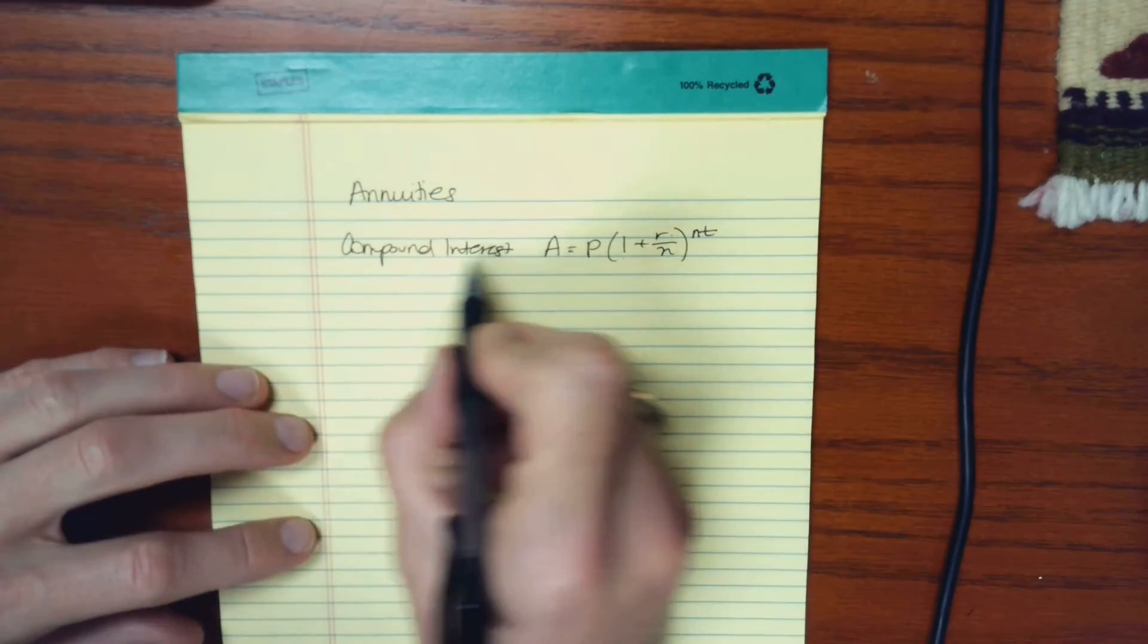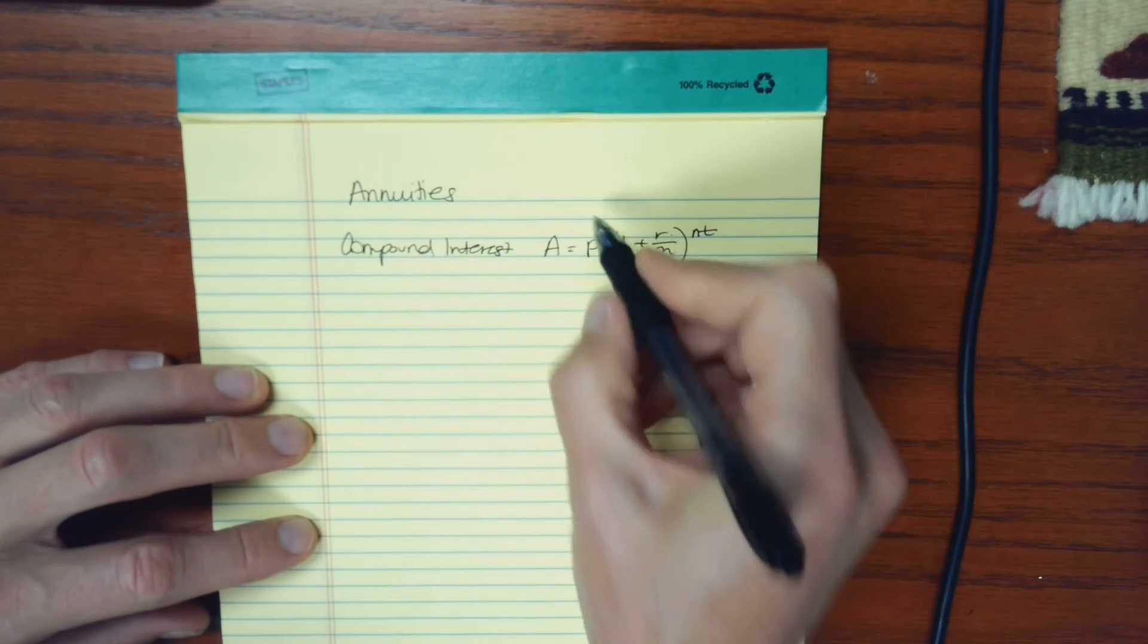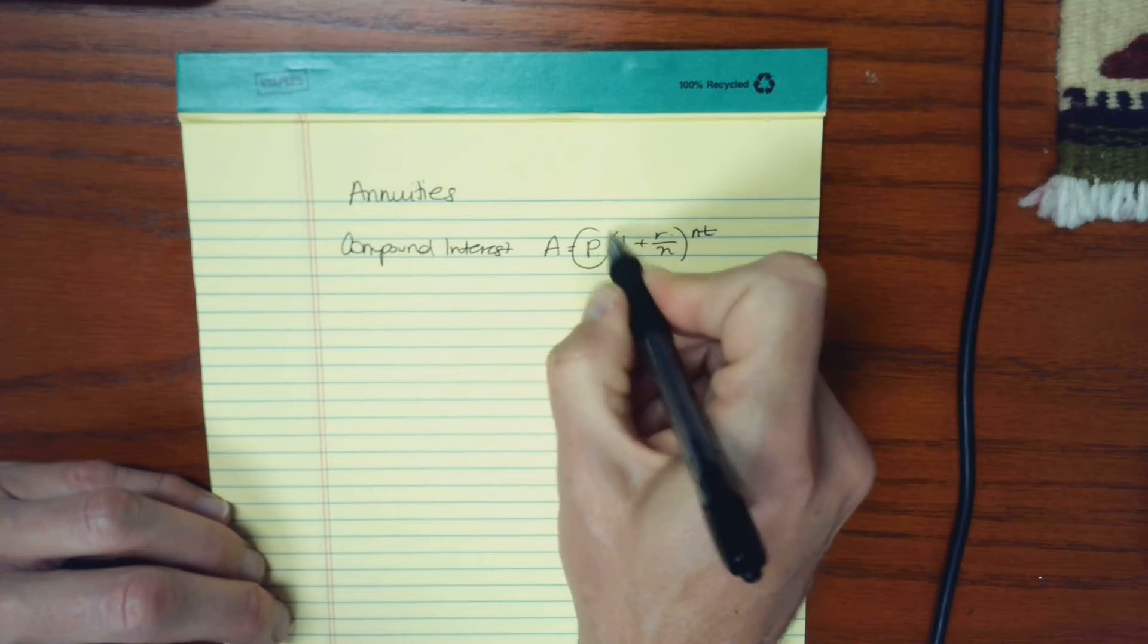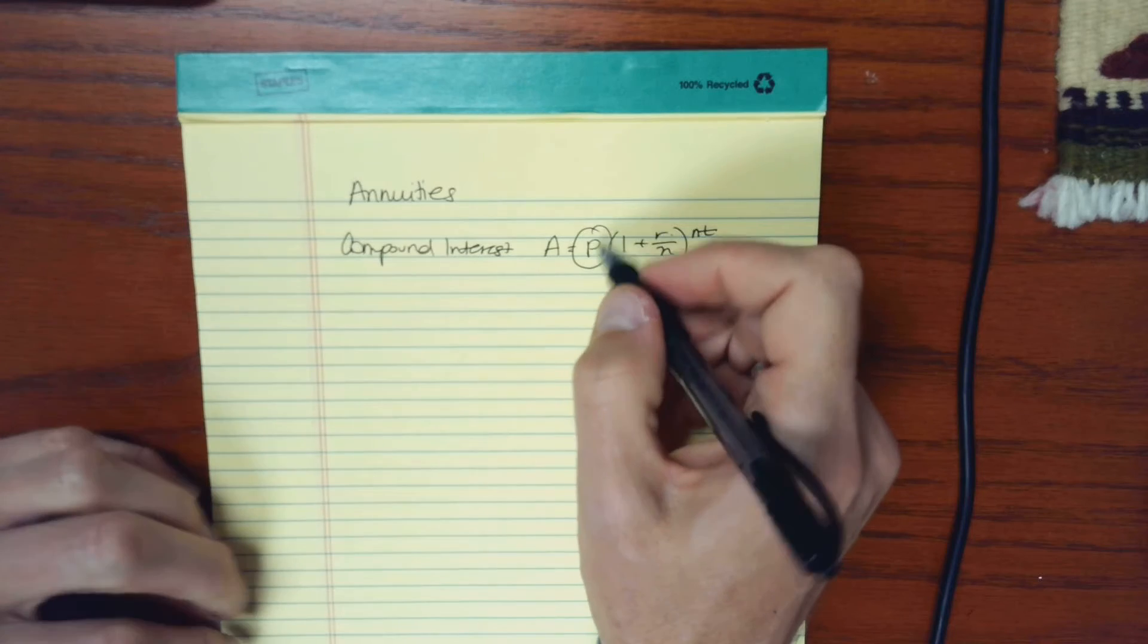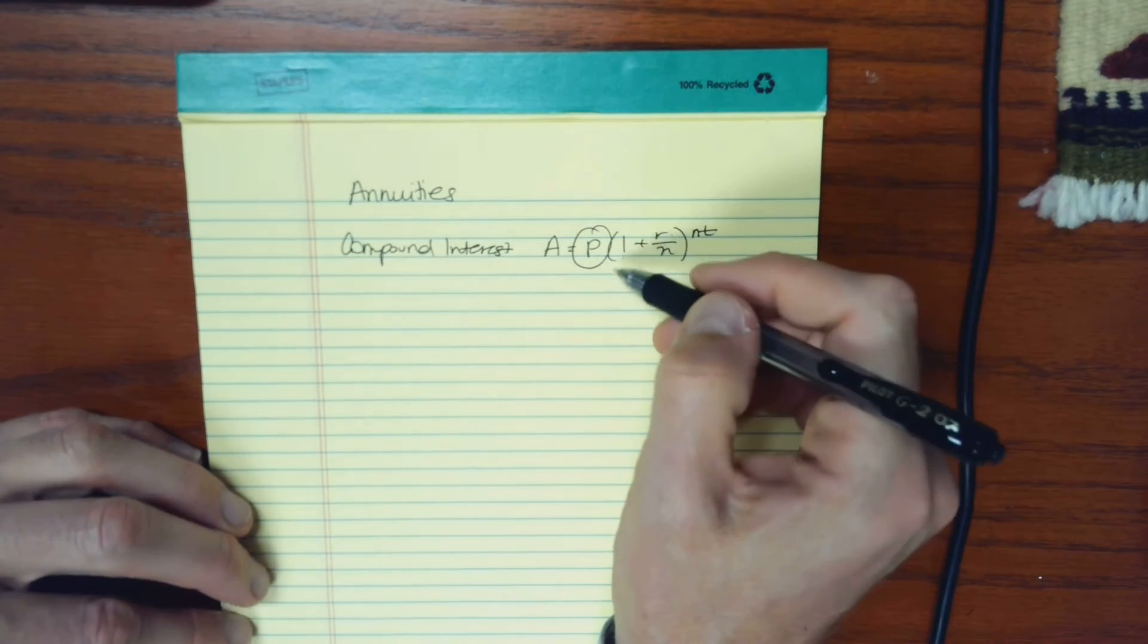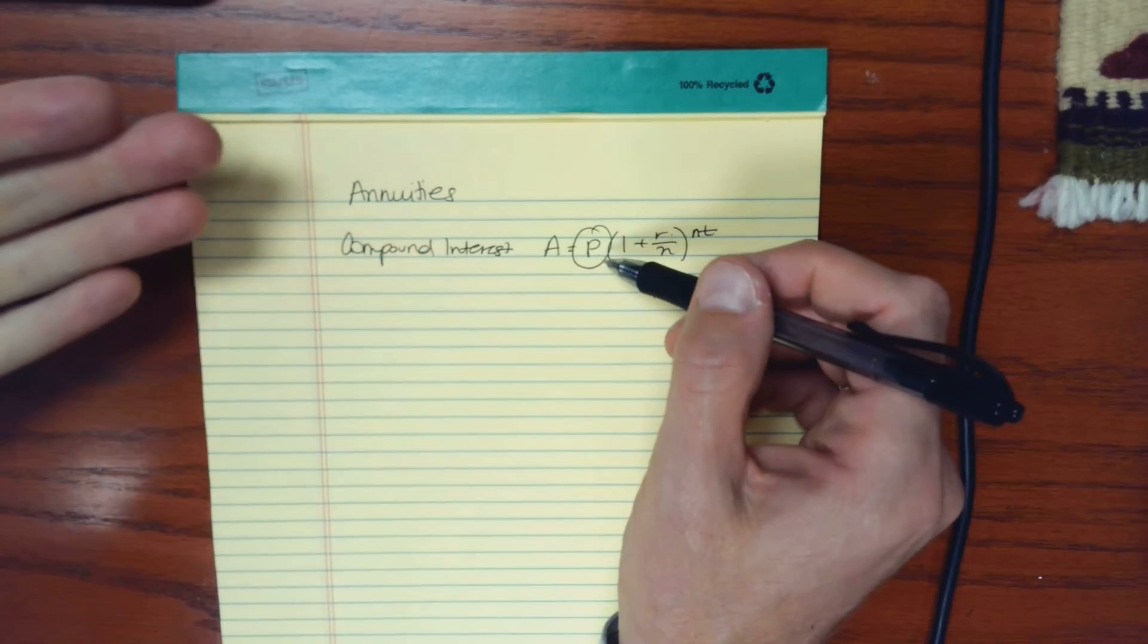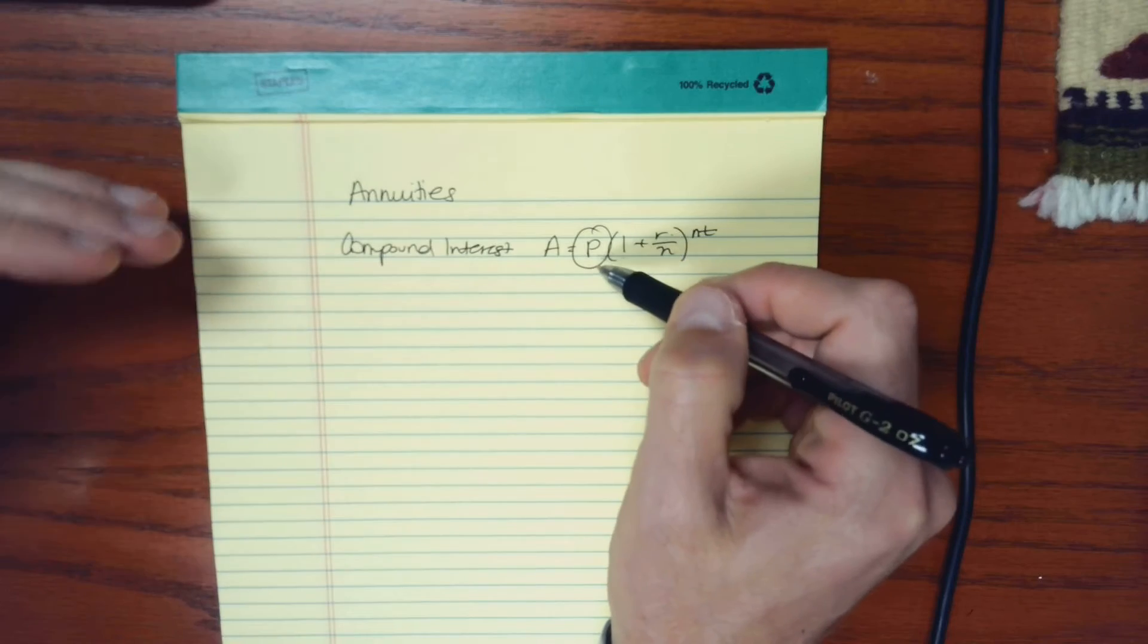So this formula kind of hinges on the fact that you have a certain flat amount, like a principal, a lump sum that you can invest and then leave it alone for a certain amount of time. However, that's not the way the majority of people accumulate wealth or save money.